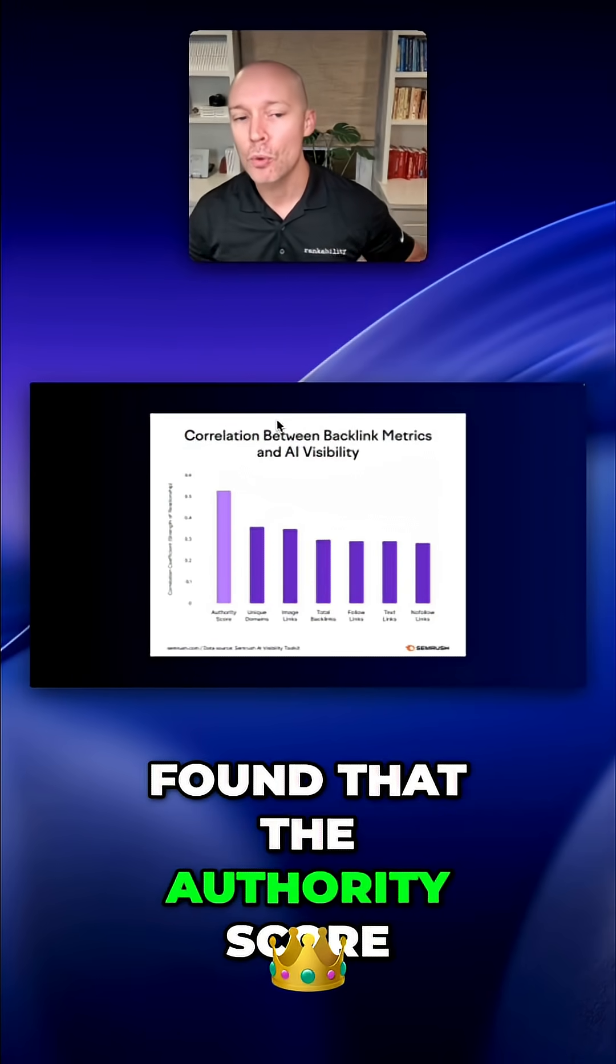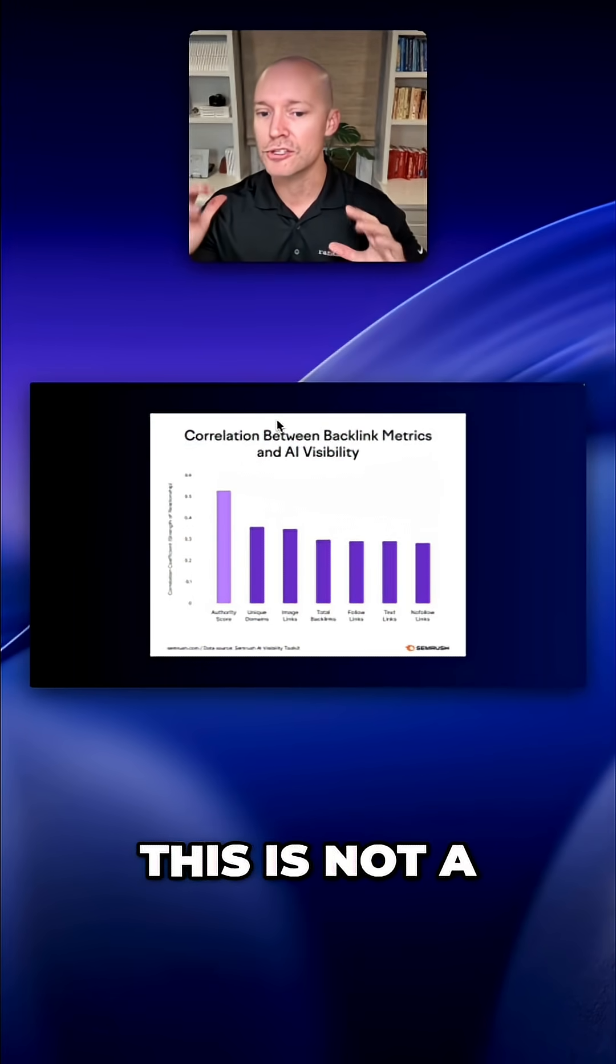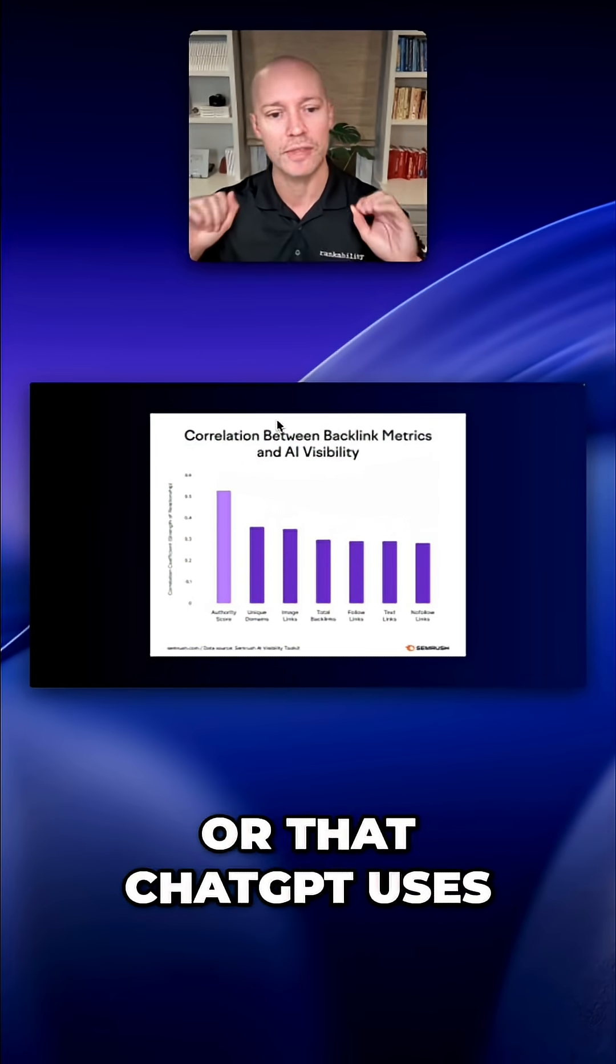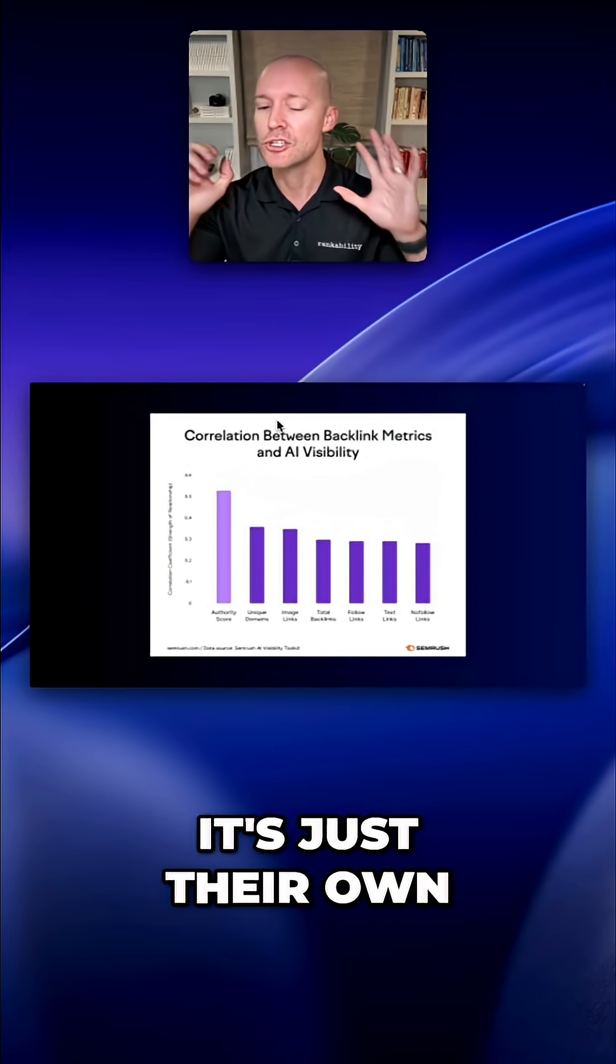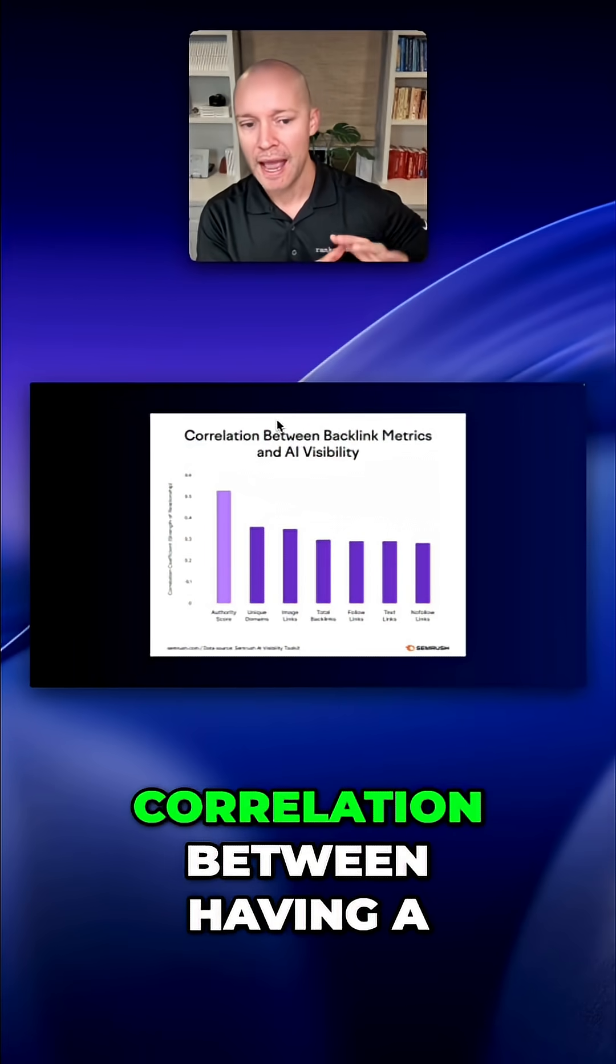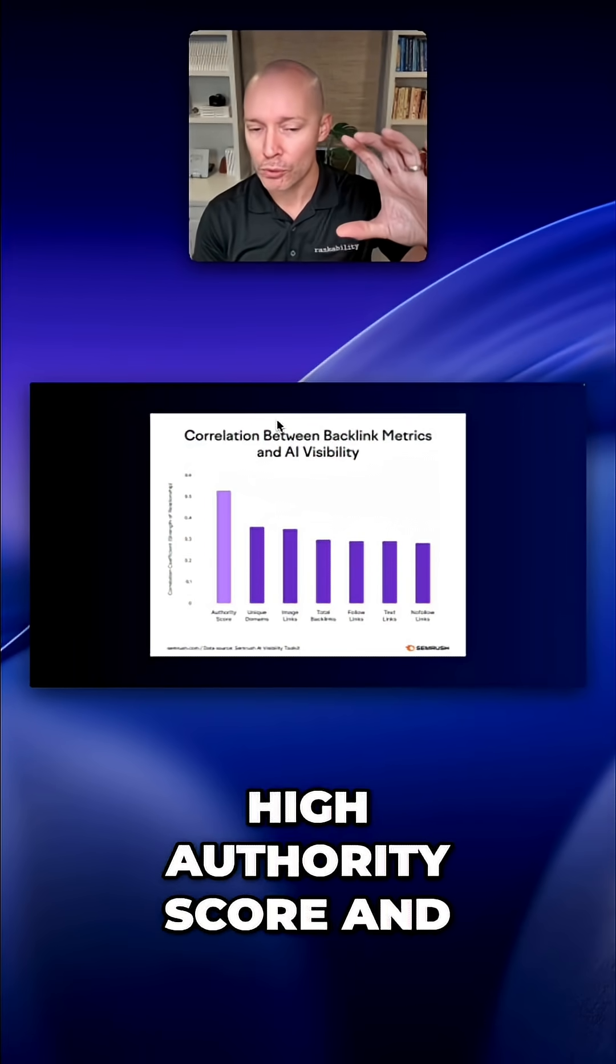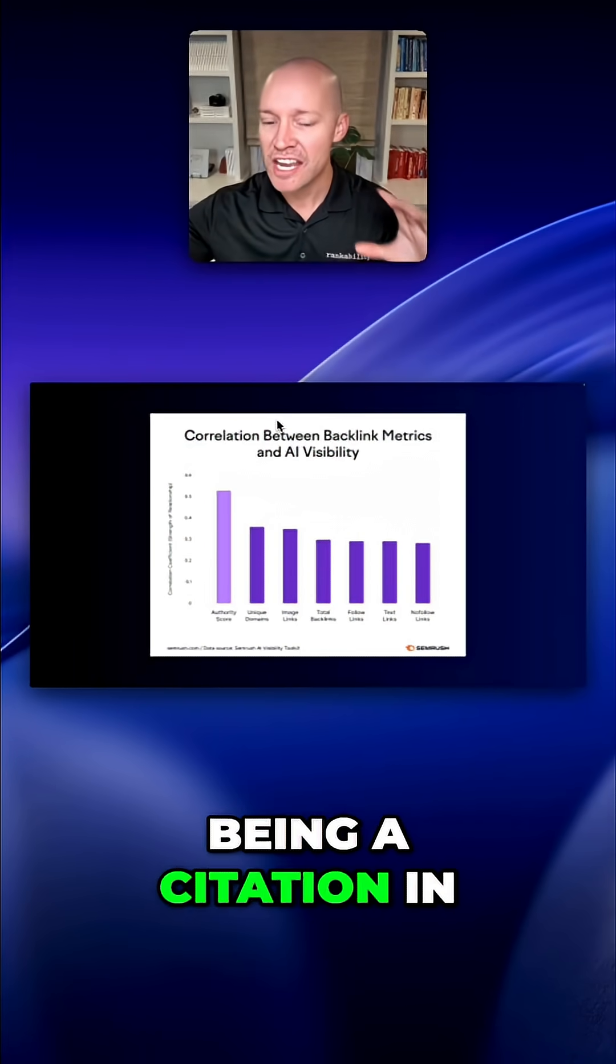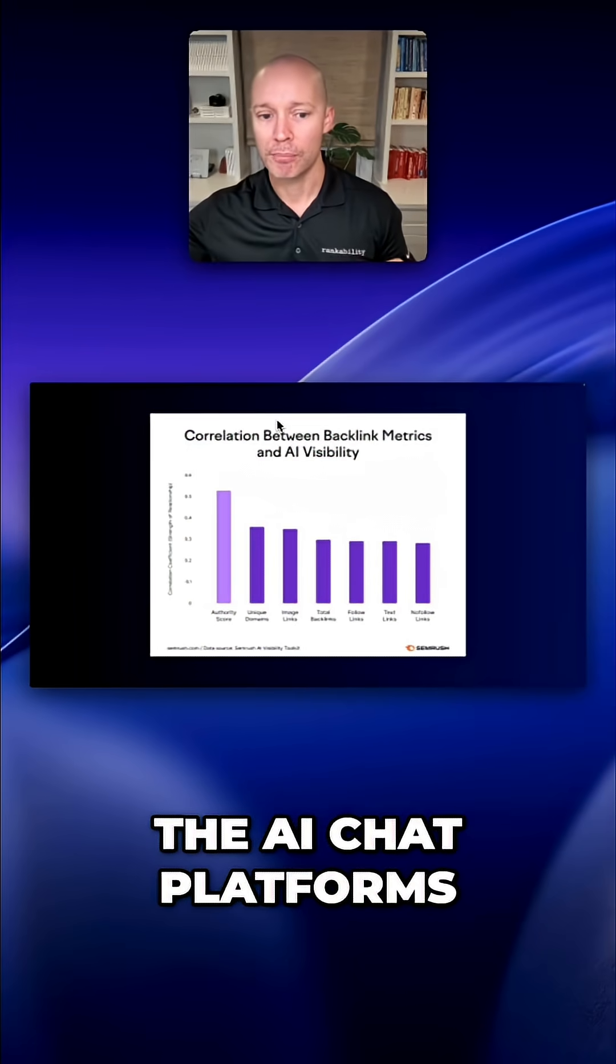Well, the authority score, which is their third-party metric, by the way, this is not a score that Google uses per se or that ChatGPT uses. It's just their own proprietary metric. They did find a correlation between having a high authority score and being a citation in the AI chat platforms.